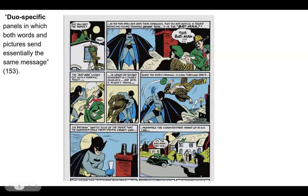The last panel I want to look at is this one: 'The Batman swiftly picks up the paper that the murderer stole from Stephen Crane's safe.' This does the same thing as the previous ones — it's just describing what's being done in the image. However, it does remind us through language where that paper came from. You could track it through the panels yourself, but because the language tells us it's the paper from Stephen Crane's safe, we're reminded of that as readers, making it easier to follow the story without having to flip back and forth.